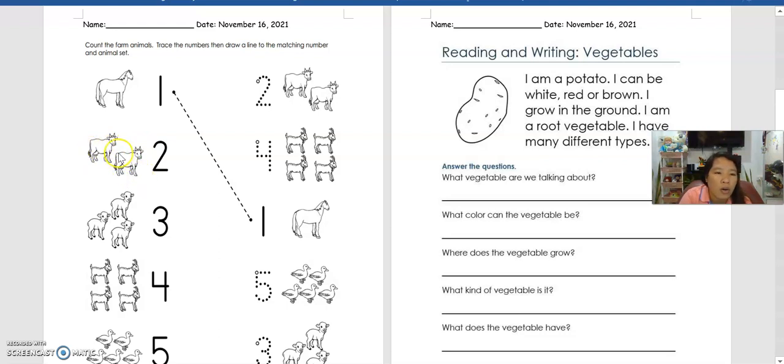These are cows, and then you're going to look for the same animals. This is number two, and then you're going to trace it again to this number two, and then you have to trace the number two.